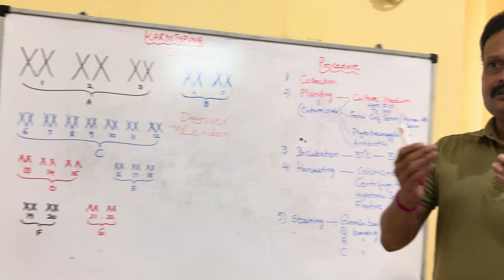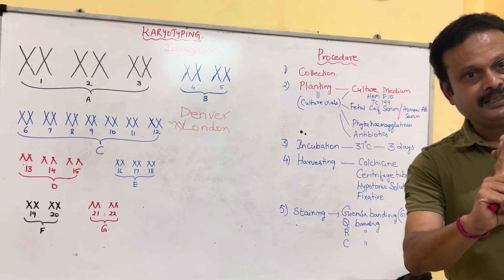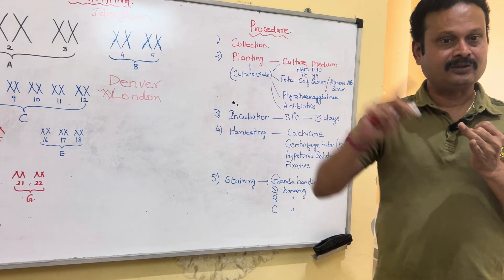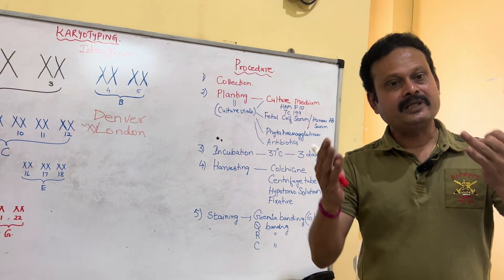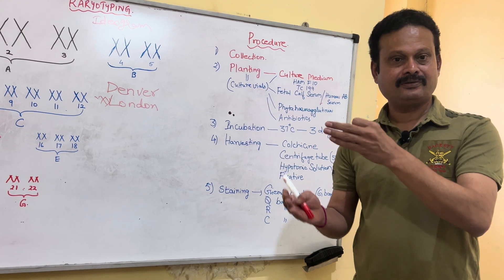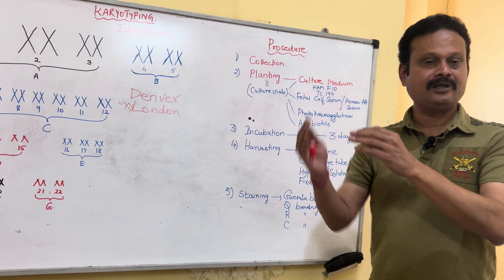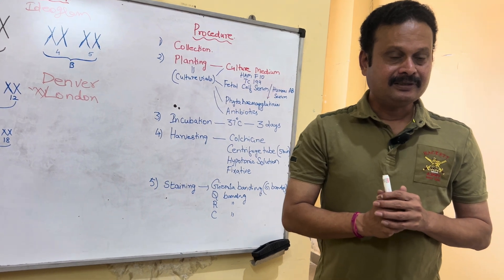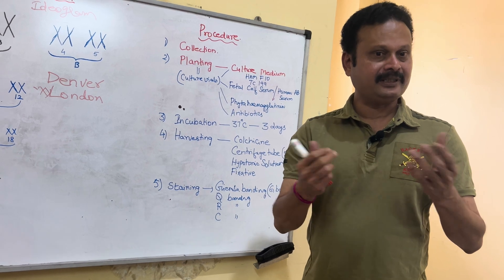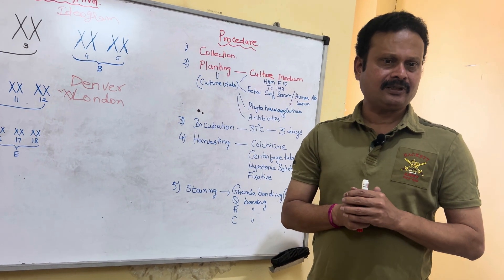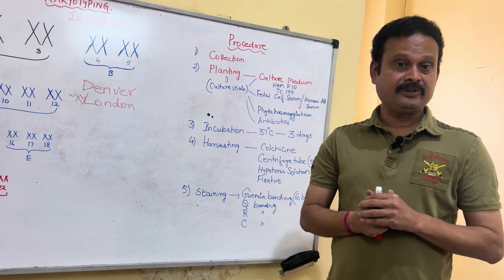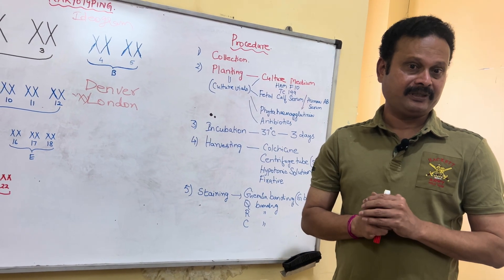The uses of karyotyping include: early clinical diagnosis, gene mapping — that is, determining the location of genes on a chromosome — and a role in cancer detection, such as the Philadelphia chromosome in CML involving translocation from chromosome 22 to the long arm of chromosome 9. It is also used in antenatal diagnostic techniques and helps prevent repeated fetal loss. These are the uses of karyotyping.